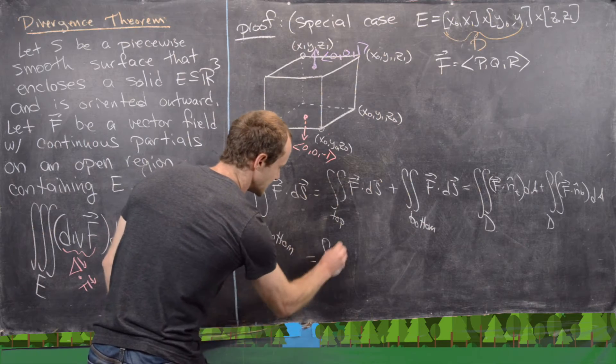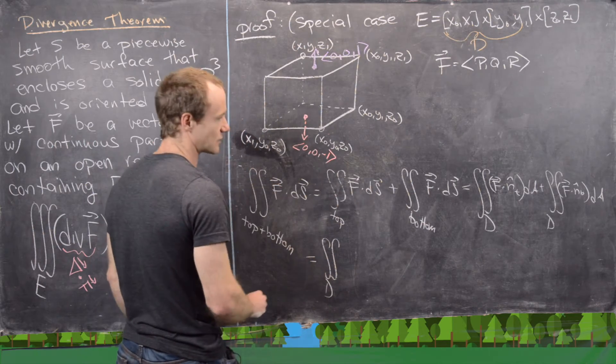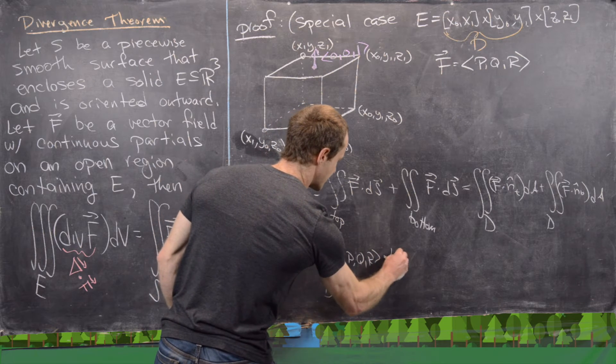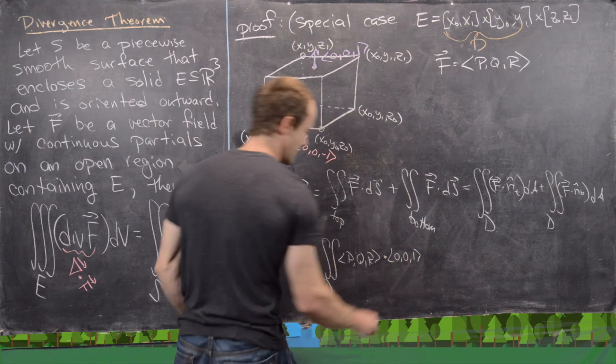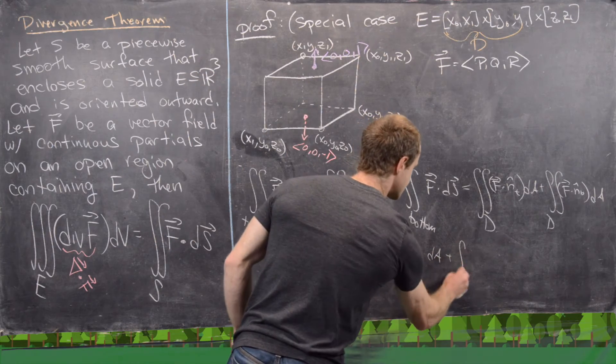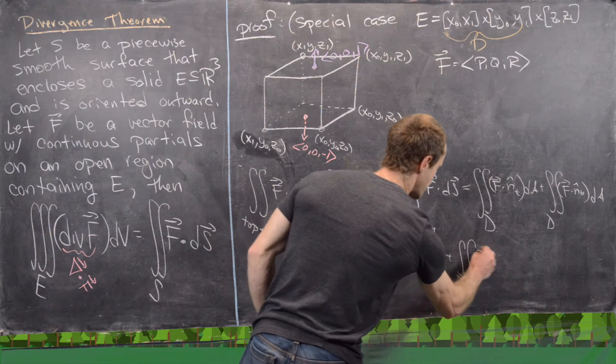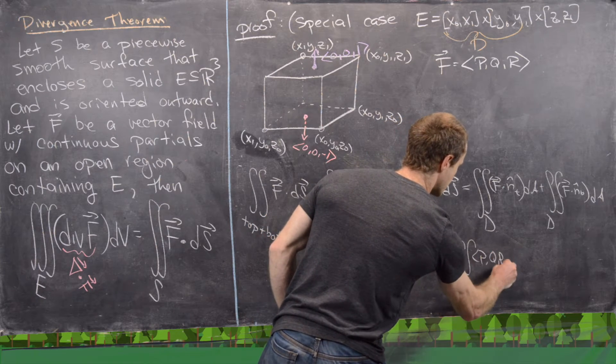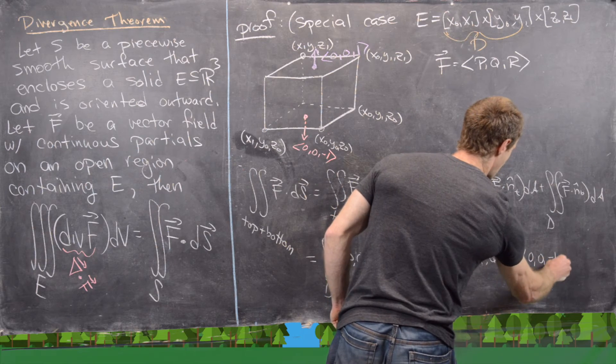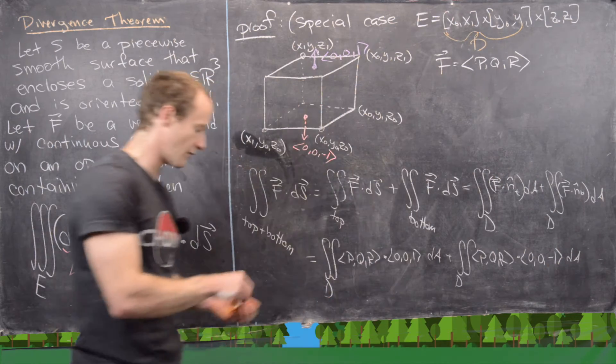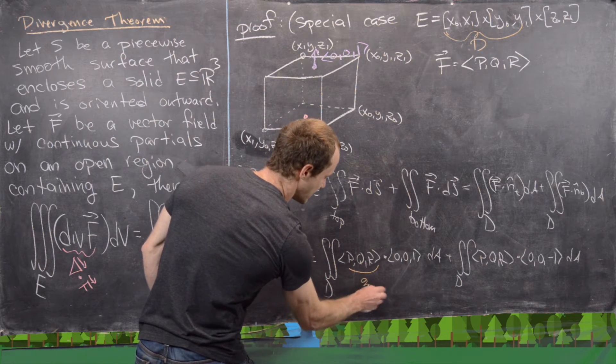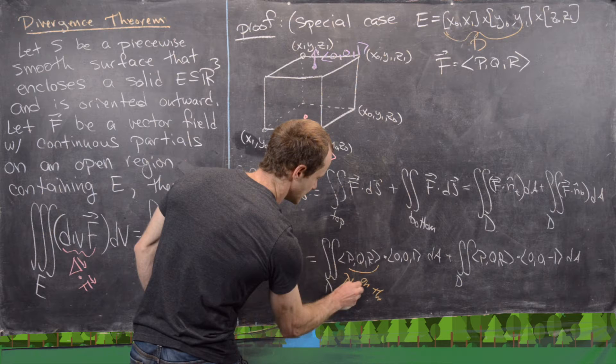And that's going to give us the double integral over D of (p, q, r) dotted with (0, 0, 1) dA plus the double integral over D of (p, q, r) dotted with (0, 0, -1) dA.